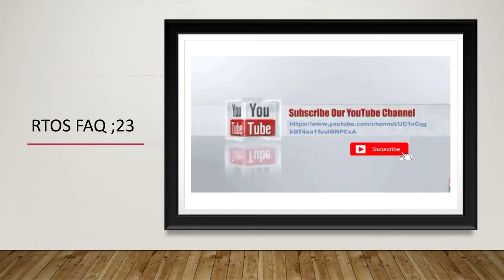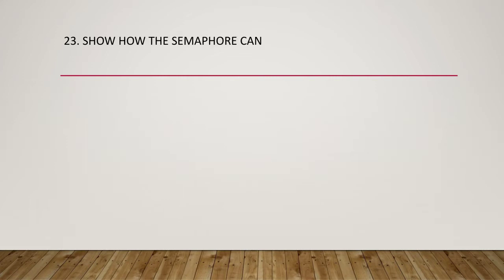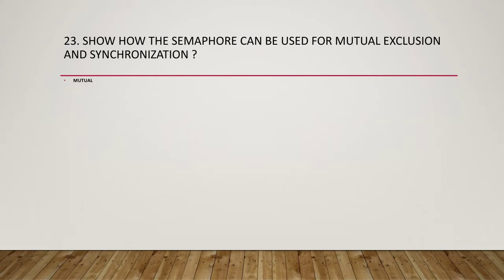Welcome to Real-Time Operating Systems FAQs. Subscribe to our channel for more FAQs and concepts in embedded systems and job opportunities. This video shows how a semaphore can be used for mutual exclusion and synchronization. A mutual exclusion binary semaphore limits the scope of mutual exclusion to only the associated resource.